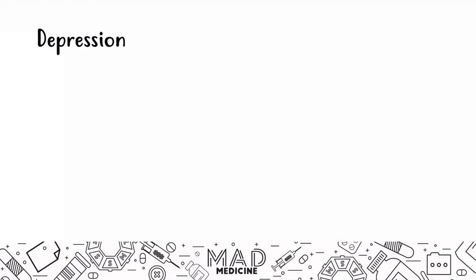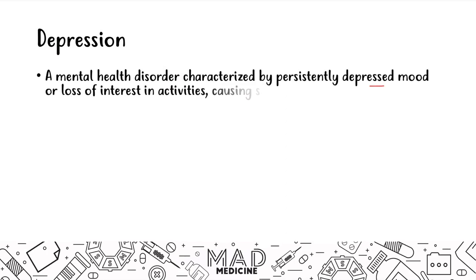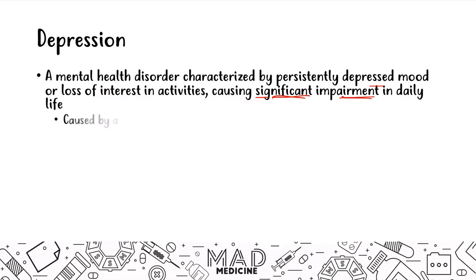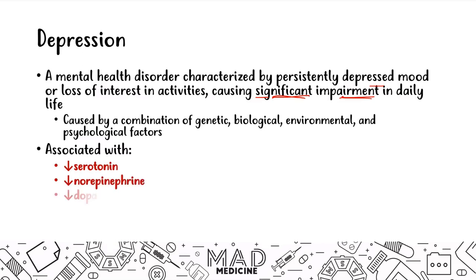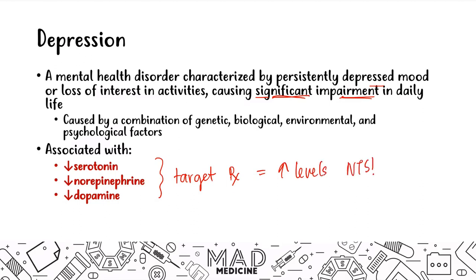We're going to begin by talking about depression, aka the big sad. The big sad is a mental health disorder characterized by a persistently depressed mood, loss of interest, and significant impairment in your day-to-day function. It's a multifactorial disease — genetics, biology, psychology, and environment all play a role. It's associated with decreased levels of neurotransmitters, specifically serotonin, norepinephrine, and dopamine. The drugs we use usually target these neurotransmitters to increase their levels.